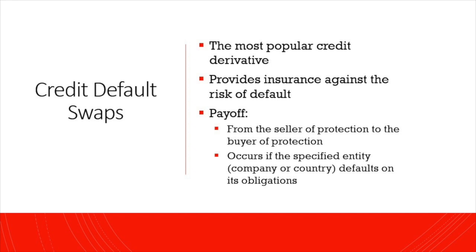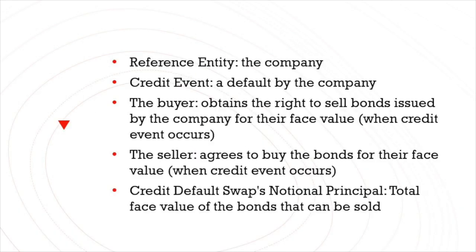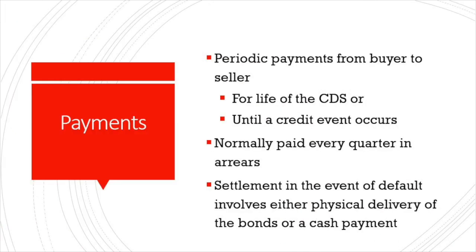Credit default swaps are the most popular credit derivative. They provide insurance against the risk of default, and the payoff goes from the seller of the protection to the buyer of the protection, occurring if the specified entity — meaning the company or the country — defaults. We refer to the company as the reference entity and the default as a credit event. The buyer obtains the right to sell bonds issued by the company for their face value when the credit event occurs, and the seller agrees to buy these bonds for their face value. The notional principal is the total face value of the bonds that can be sold. Periodic payments from buyer to seller occur either for the life of the CDS or until a credit event occurs, normally paid every quarter.